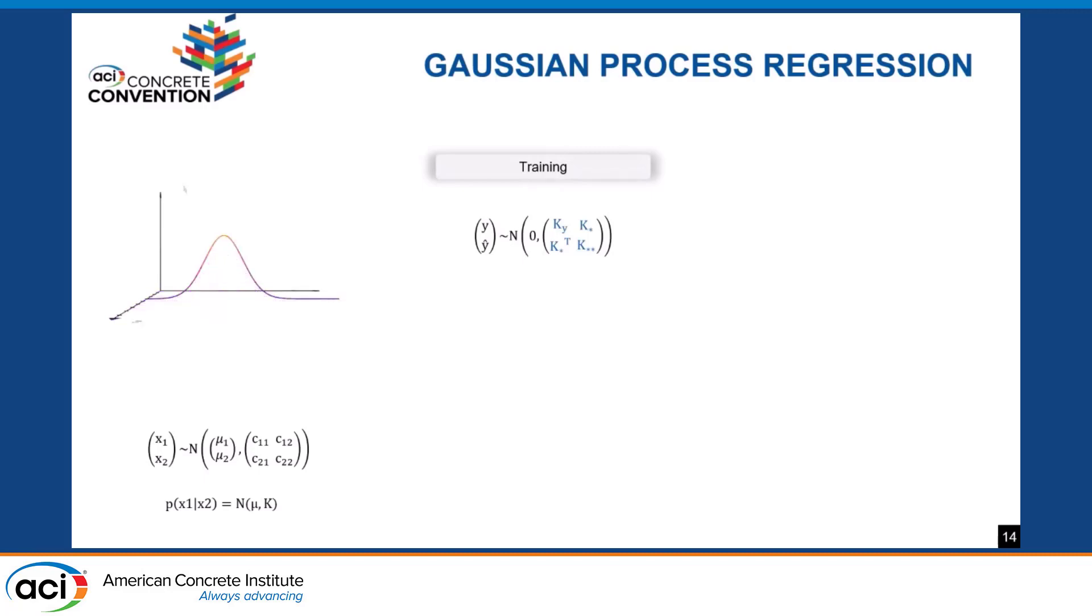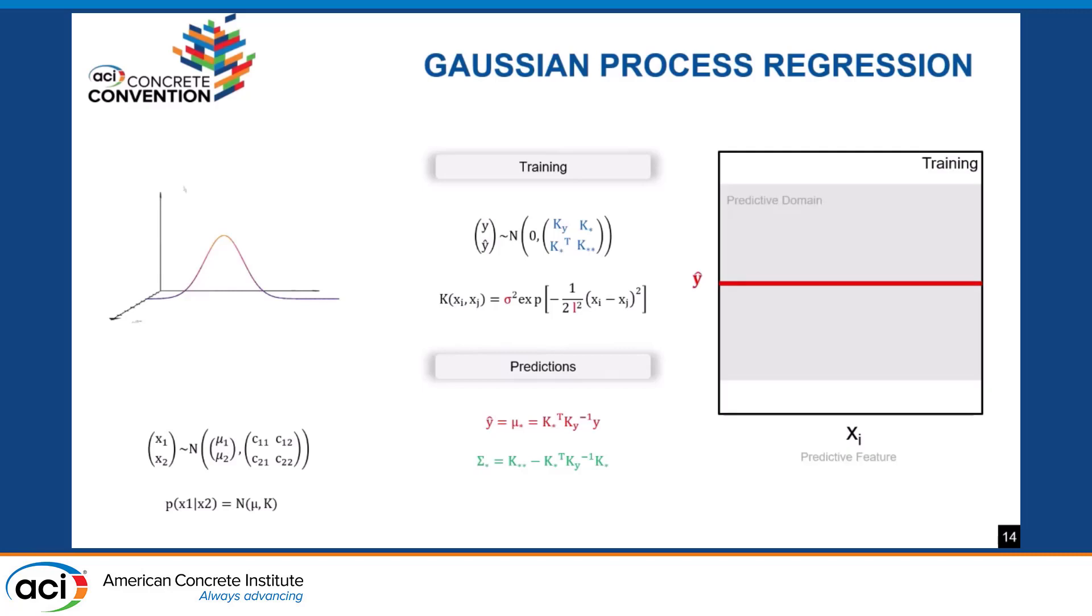All the target features or predictions follow a Gaussian distribution with a mean zero and covariance matrix K. If two samples have similar predictive features, they should have high correlation and therefore similar predictions. If we could find this covariance matrix, we could apply the conditional property and come up with equations for predictions and its corresponding variances. The covariance matrix is given by the Kernel function, a measure of the similarity between predictive features. There are two parameters that need to be defined first: sigma and l. These parameters define the shape of the functions that correlate predictive and target features.